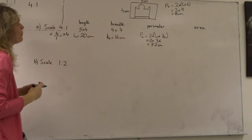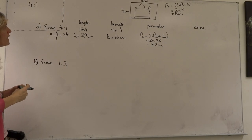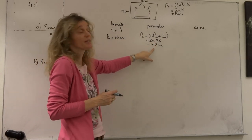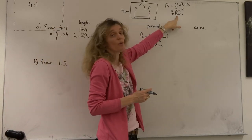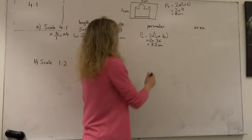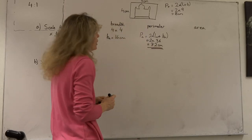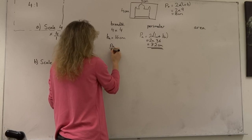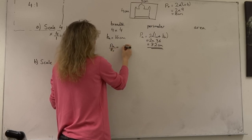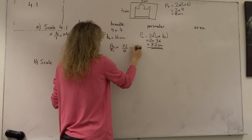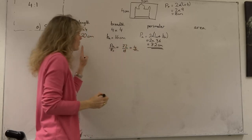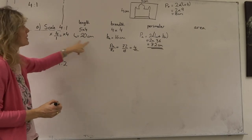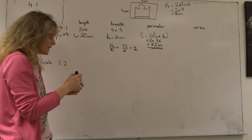When we increase the length and breadth by 4, our perimeter of 72 is 4 times the original perimeter of 18. So the perimeter of the enlarged sketch divided by the perimeter of the original is 72 divided by 18, which equals 4. The perimeter is increasing by the same factor as the length and breadth — and this is the interesting thing when it comes to maths.